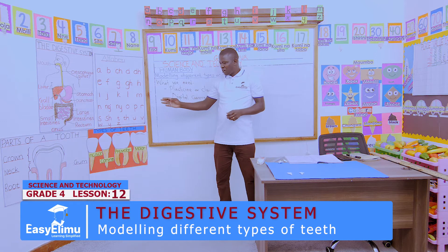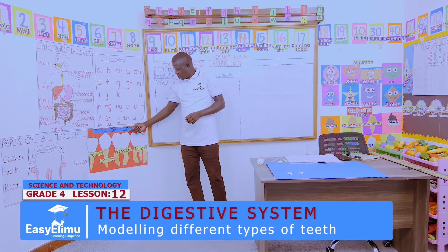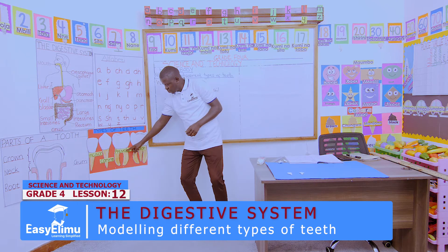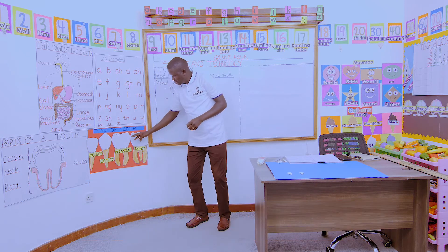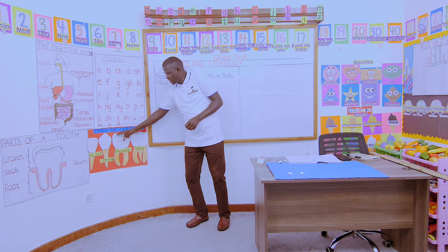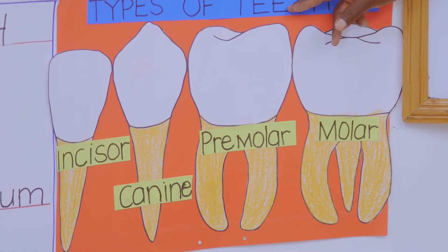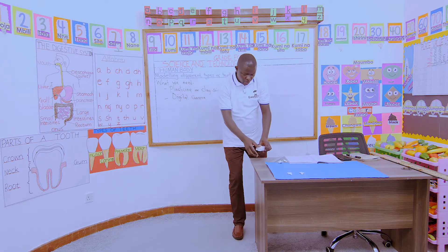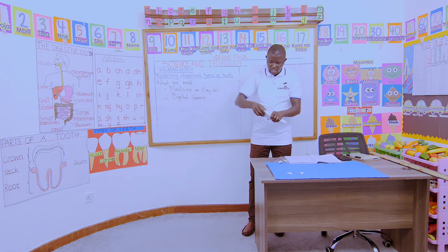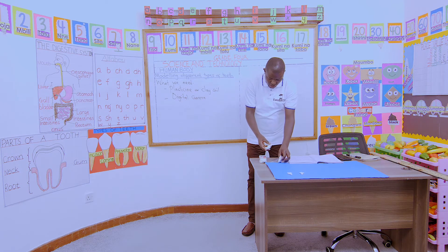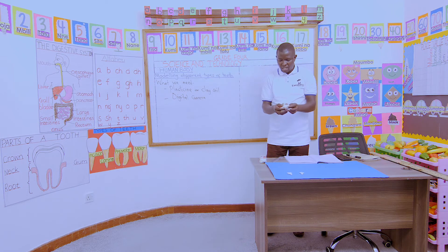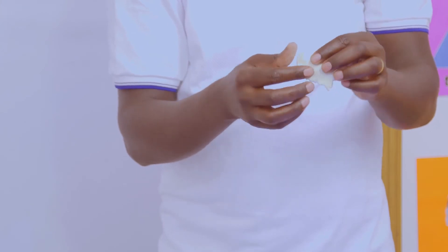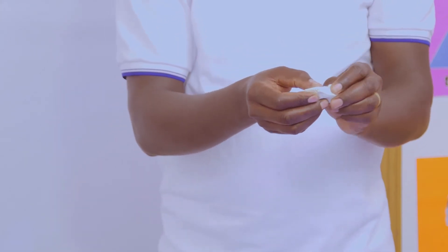Can we now go to tooth number three? We call it the premolar. The premolar has two roots, and it has ridges at the top. We call them cusps. So make sure you model something with ridges. Pick your clay again — we model tooth number three, the premolar. Make sure it has two roots.